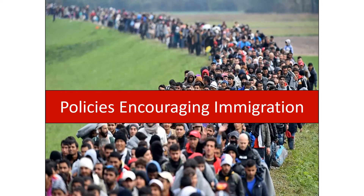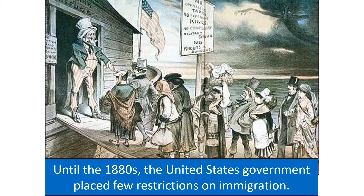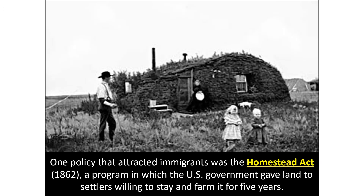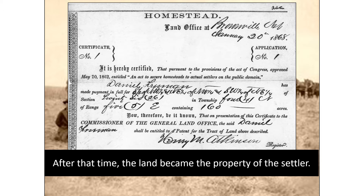Policies encouraging immigration. Until the 1880s, the US government placed few restrictions on immigration — basically, if you could get here, you could stay. The ratio of farmland to workers was high, so immigrants were welcome. One US policy that attracted immigrants was the Homestead Act, a program in which the government gave land to settlers willing to stay and farm it for five years, after which the land became the settler's property.